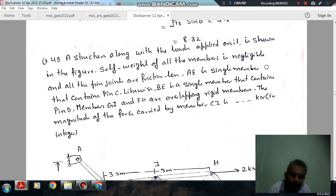Hello, welcome again. We are solving GATE 2022 Mechanical Engineering Paper 1. Question number 14 is a structure along with the load supplied on it as shown in the figure. Self-weight of all the members is negligible and all the pin joints are frictionless. A is the single member that contains pin at C.